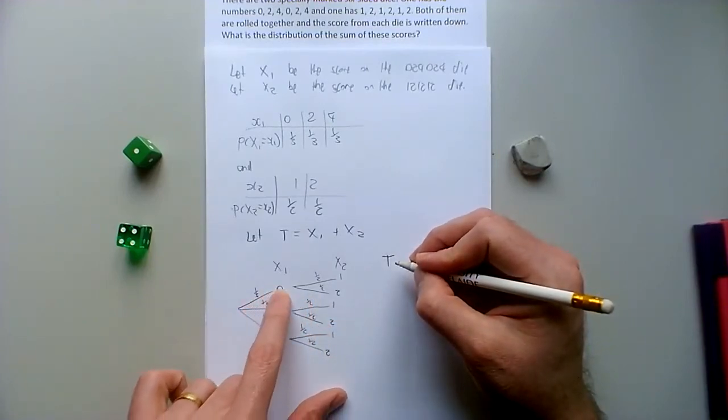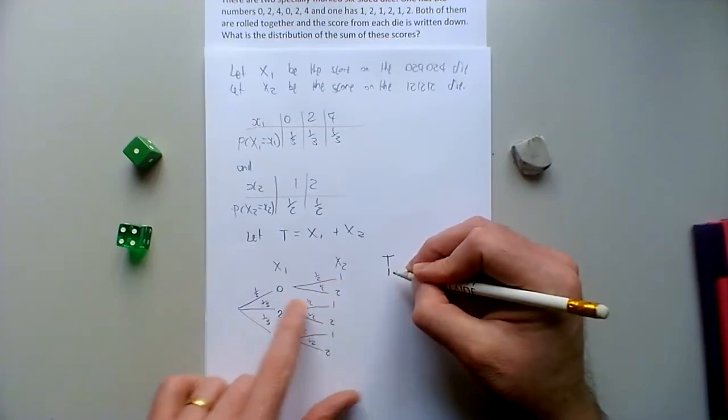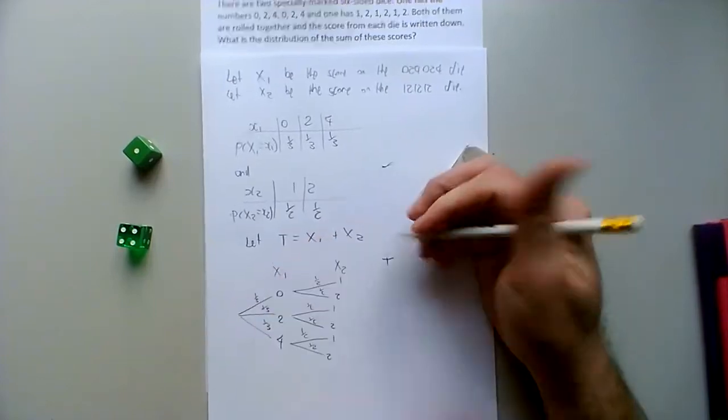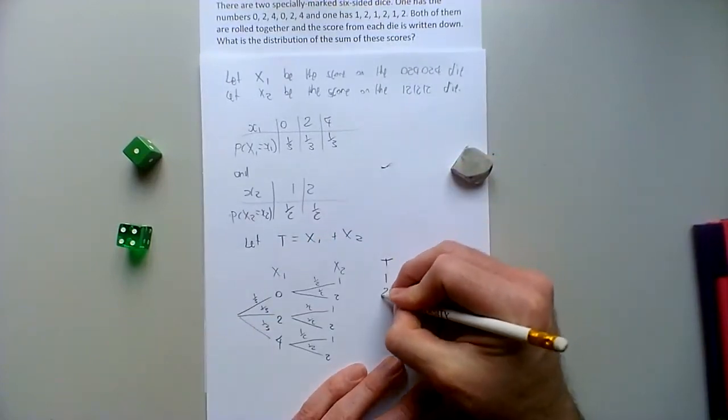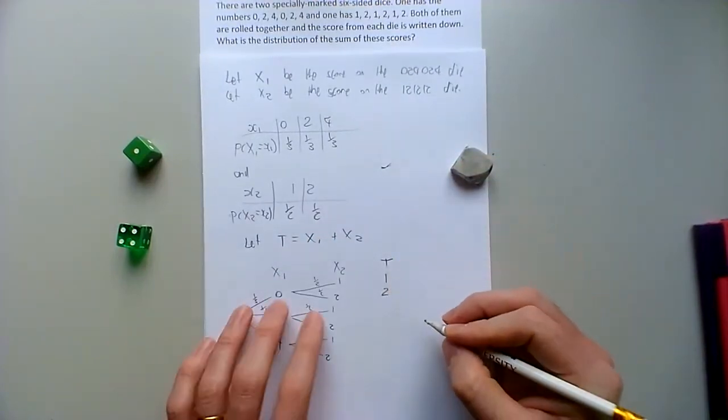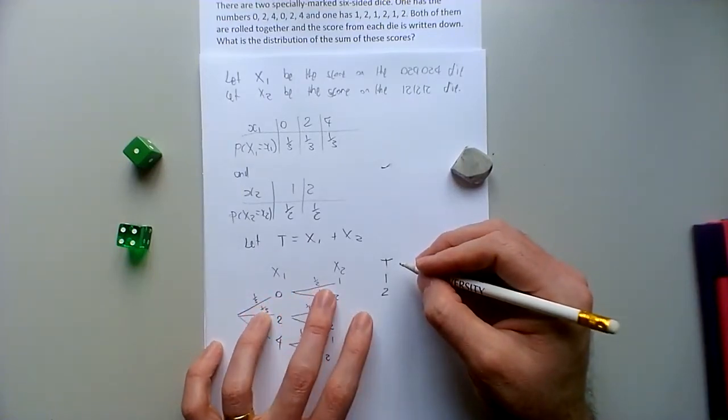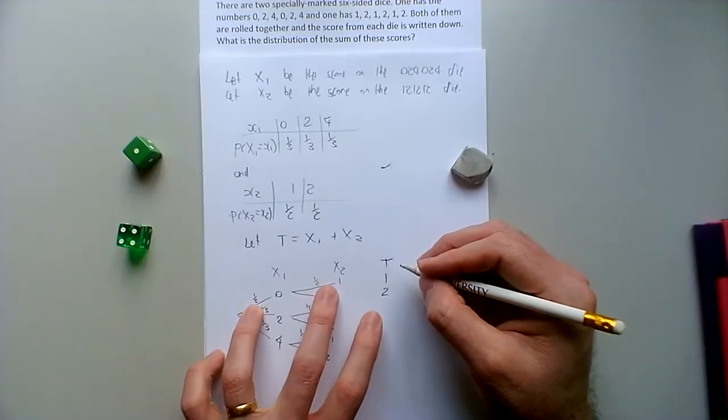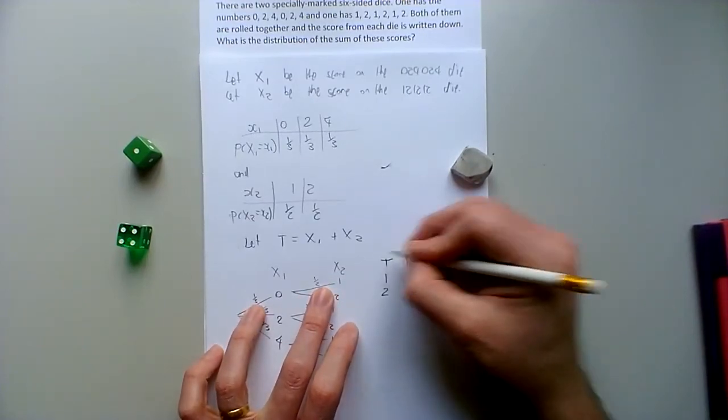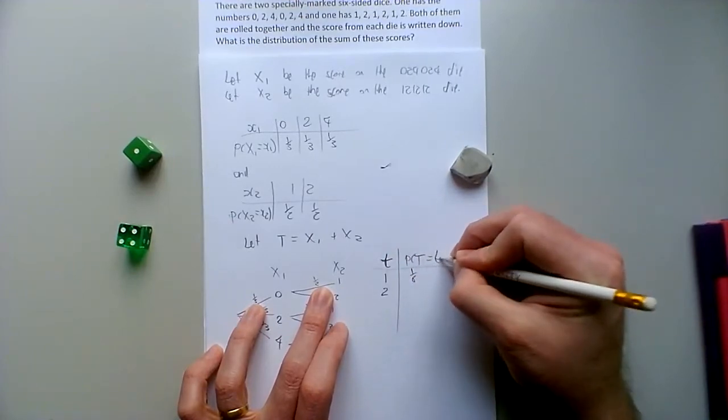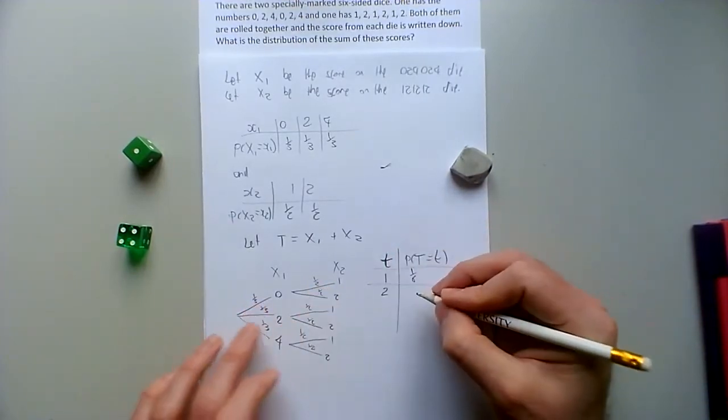So we're going to get 0 plus 1 is 1, 0 plus 2 is 2, I might line them up better. And the probability that goes with that would be a third times a half, which would be a sixth. Or we can just set up the table like this, sideways, vertically.